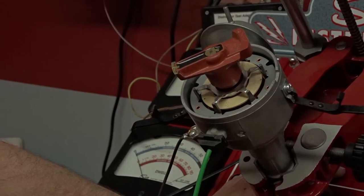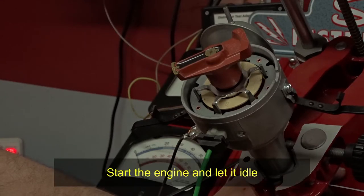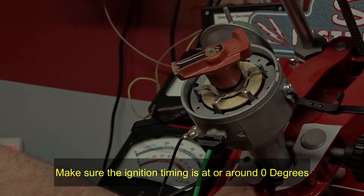So if you don't have an oscilloscope in your shop or at your home, a quick way to see if your car is wired correctly, is to look in the ignition distributor itself. So what you need to do is start the engine, let it idle, make sure the ignition timing is at or around zero degrees.